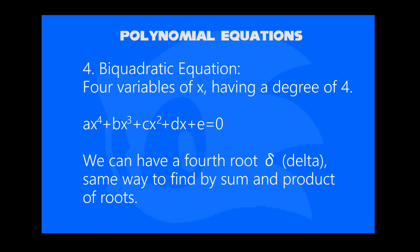Finally, the bi-quadratic equation, where x has a degree of 4. We write ax to the 4th plus bx cubed plus cx squared plus dx plus e equal to 0. As we seen from the previous section of cubic equation, you can now add a new root, delta, then you can do the same thing.